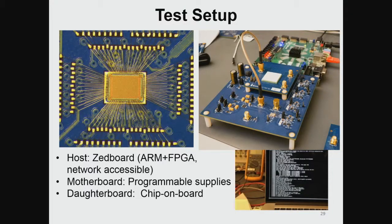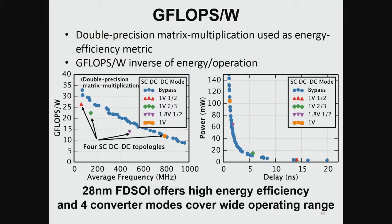This whole thing, miraculously — or due to our design methodology — booted Linux within two hours after we received the chip, and is still working today and being demoed here. As a result, we claim that while processors typically achieve around one gigaflop per watt, we are at around 34 gigaflops per watt by using this accelerator and the ability to run at low voltages.